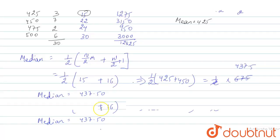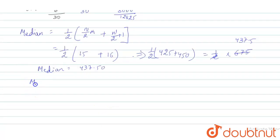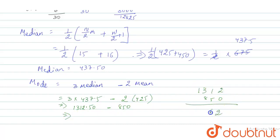Now mode. Mode equals to 3 median minus 2 mean. So 3 into 437.5 minus 2 times 425, that will result to 1312.5 minus 850, so the mode will be 462.50.